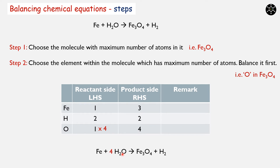Let us count the number of atoms on LHS and RHS again. Iron: 1. Hydrogen: now we have 8 (2 × 4). Oxygen: 4. Observing: iron 1 vs 3 — not balanced. Hydrogen 8 vs 2 — not balanced. Oxygen 4 vs 4 — this is balanced.